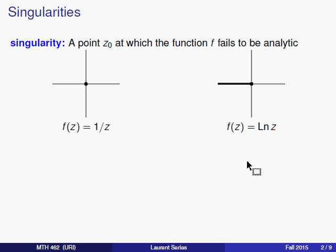Likewise, if f is the principal branch of the logarithm function, then the non-positive real axis consists of singularities for that function, because the function is not analytic there — it's not differentiable at points on this non-positive axis.